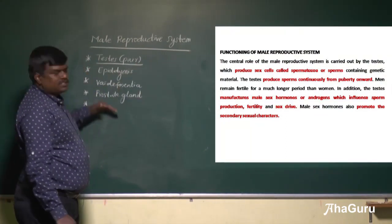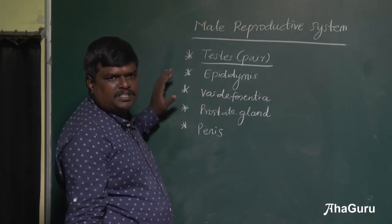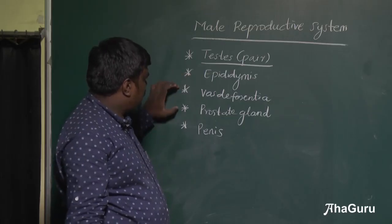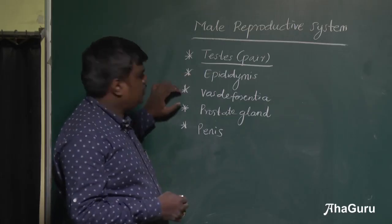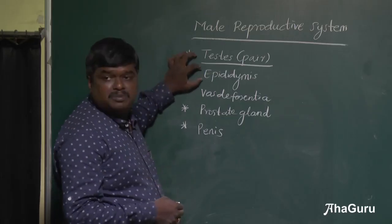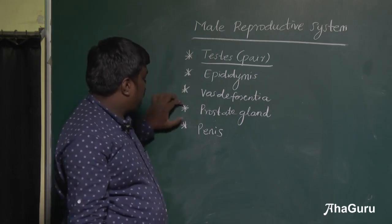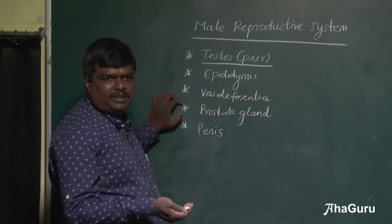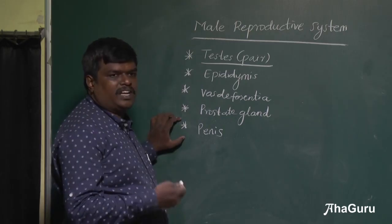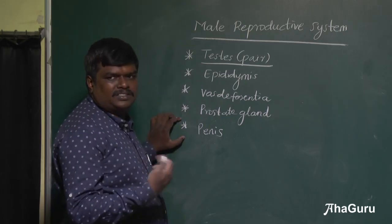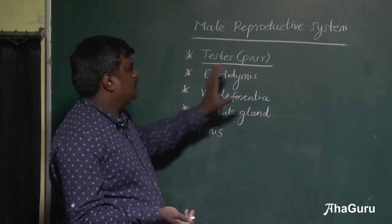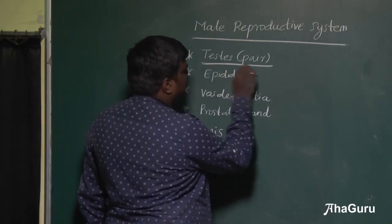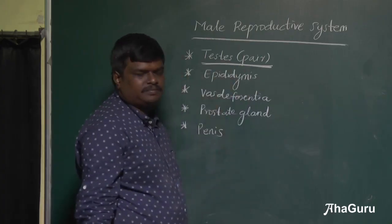Other things are all accessory — they help in transportation. The vas deferentia helps in transportation, epididymis stores the sperm, prostate gland produces semen, and penis helps in ejaculation of semen. So the primary function lies with the testis.